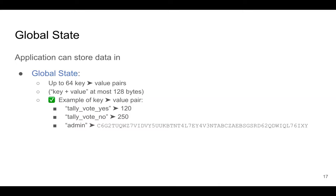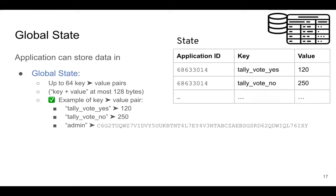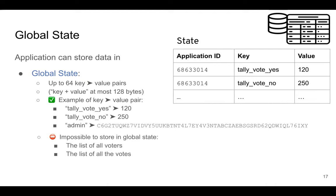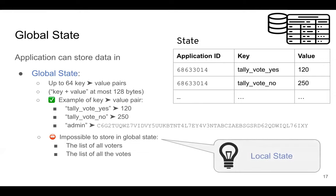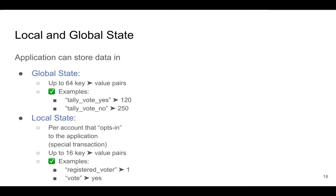For example, in the global state of a voting smart contract you can store the number of 'yes' votes — say 120 people voted yes and 250 voted no. You can also store the admin account address — the account that can administrate the smart contract, register voters, and do things that normal users should not be allowed to do. In the state of the blockchain, there is one database table that associates each application ID and key to a value. Each application ID has up to 64 keys, which is quite small — you cannot store the full list of all voters there.